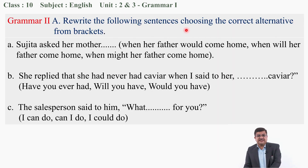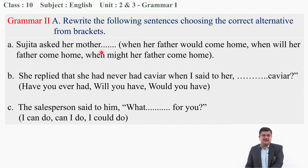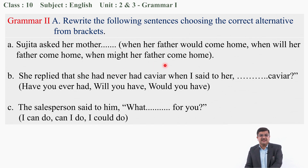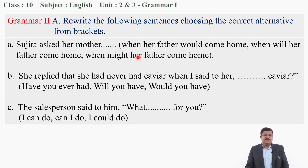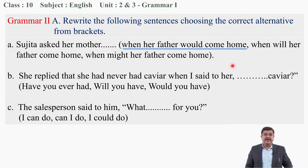Now Grammar 2: Rewrite the following sentences choosing the correct alternatives from brackets. A: Sujitha asks her mother — it is related to reported speech. The possible alternatives are: 'when her father would come home', 'when will her father come home', or 'when might her father come home'. The best answer is: when her father would come home.